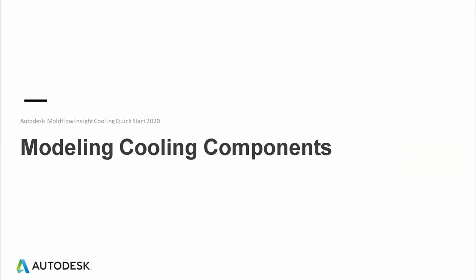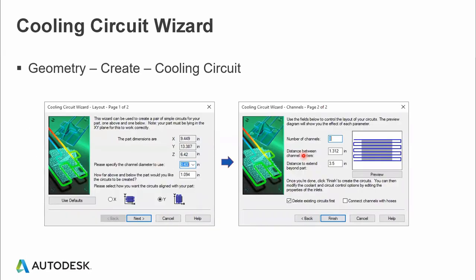Now let's look at modeling of the cooling components. I suggest getting started with the simplest approach — the cooling circuit wizard. It's the simplest way to begin understanding which sections need higher cooling and which sections don't need as much. With one click you can pull in the cooling wizard, specifying the X or Y direction, the number of channels, distance between channel centers, how far to extend beyond the part, and there's an option to connect the channels with hoses as well.